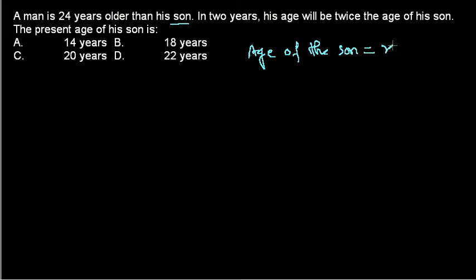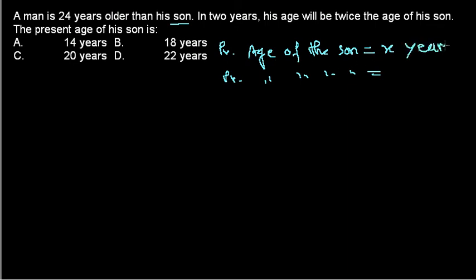Let's assume the age of the son is X. Now, the man is 24 years older than his son, so the present age of the father will be X plus 24.